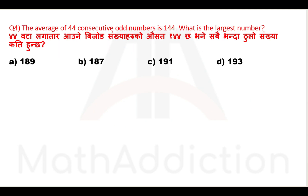Question number 4 — this is an interesting question about averages. The average of 44 consecutive odd numbers is 144. What is the largest number?